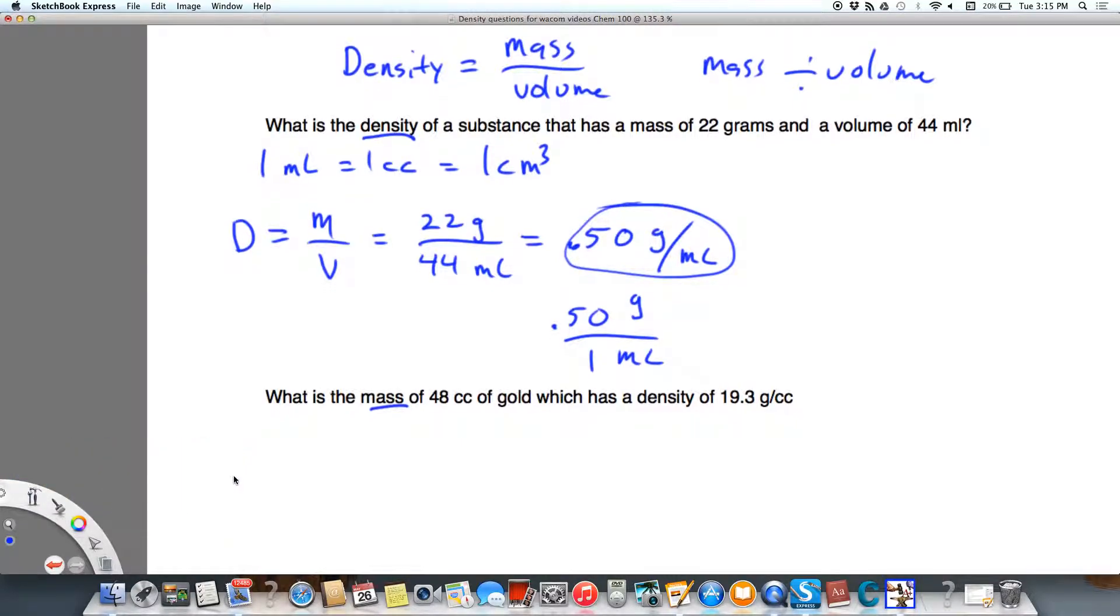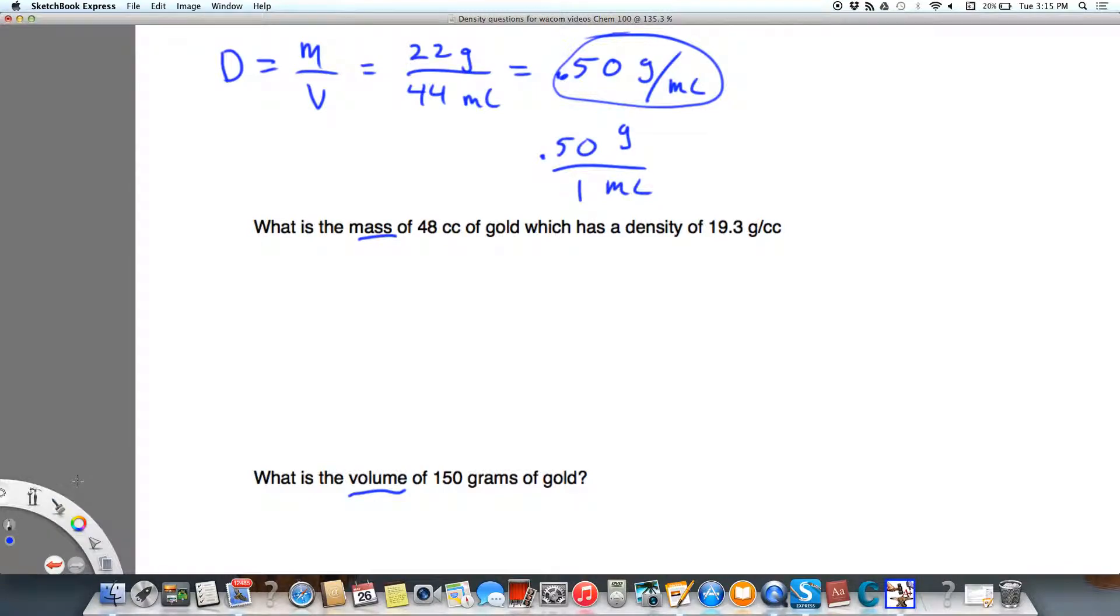So let's calculate mass now. What's the mass of 48 cc of gold which has a density of 19.3 grams per cc? Two ways to do this problem. We know that density equals mass over volume, and what we're doing here is solving for mass. So if I multiply both sides by volume, we'll see that volume cancels.